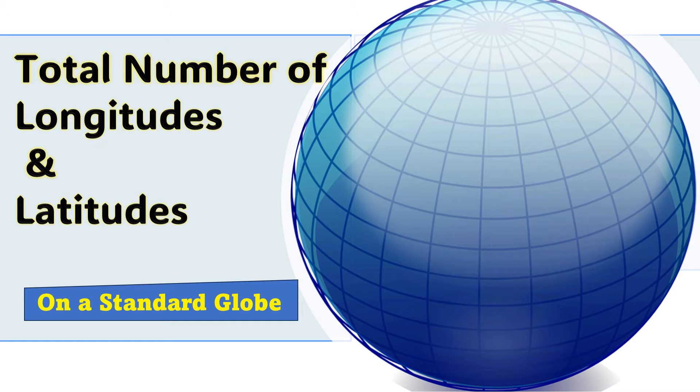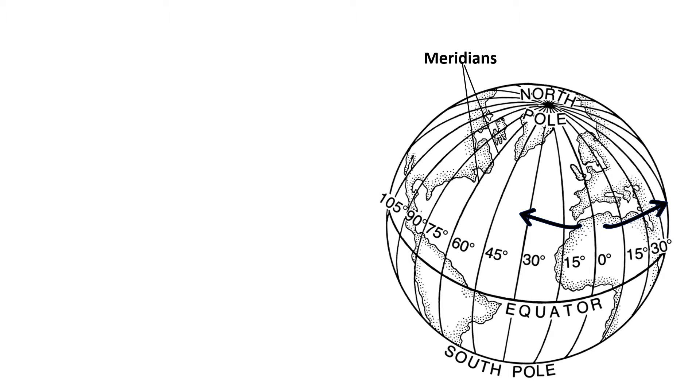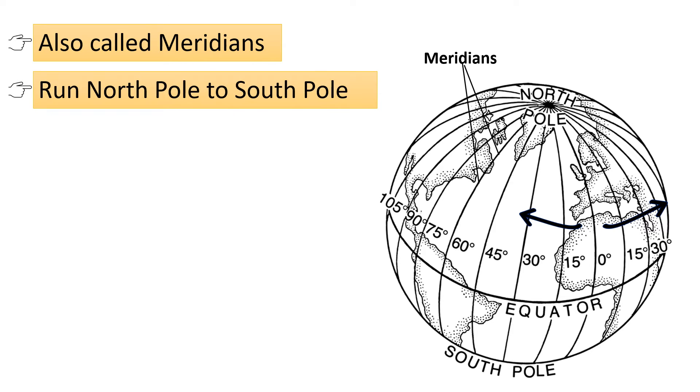Then join us for the right answer. Longitude lines, also called meridians, are imaginary lines that run from the North Pole to the South Pole on the Earth's surface.